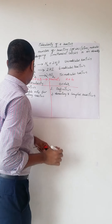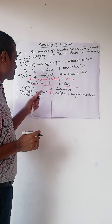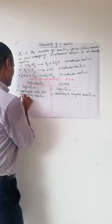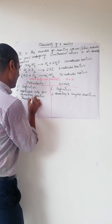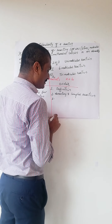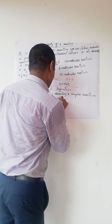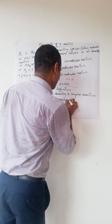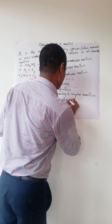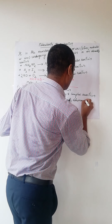The third difference: molecularity is a theoretical concept — just by observing the balanced chemical equation we can predict the molecularity of a reaction. But order of a reaction can be determined experimentally only; it is an experimentally determined quantity.